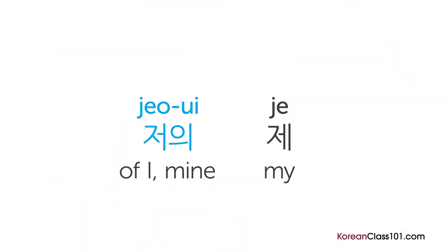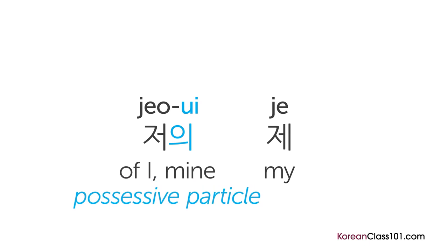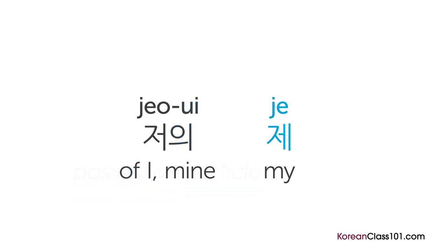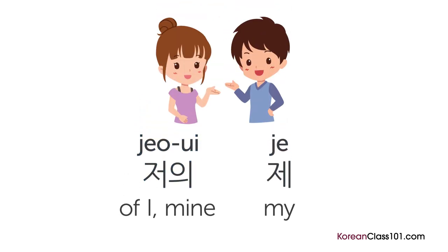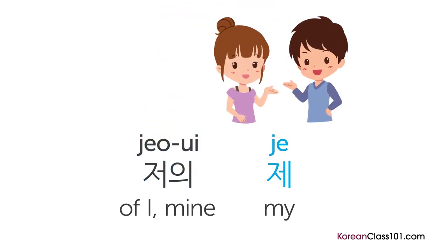The word 저의 literally means 'of I' or 'mine.' It has two parts: 저 means 'I,' and 의 is the possessive particle meaning something like 'of.' 제 is the simplified form of 저의, and in normal daily conversation, Koreans use 제 instead of 저의.